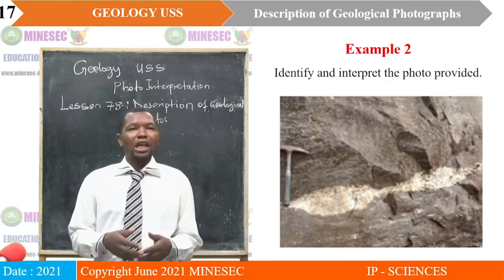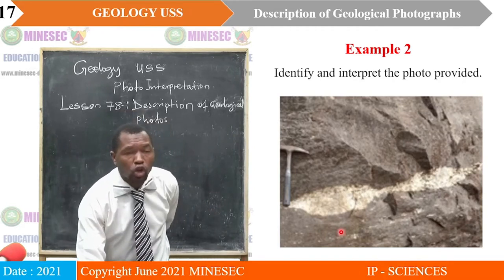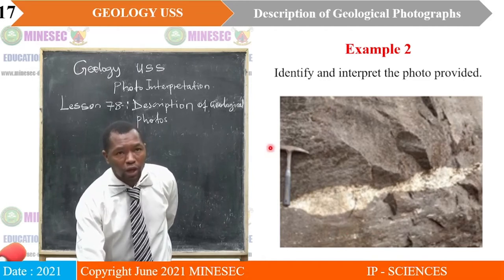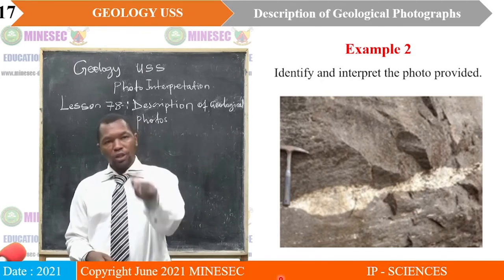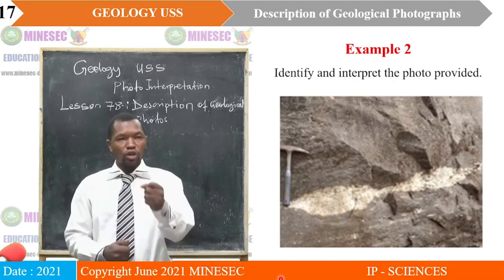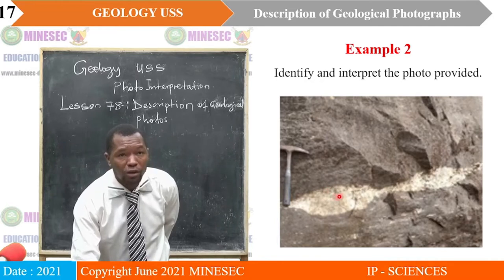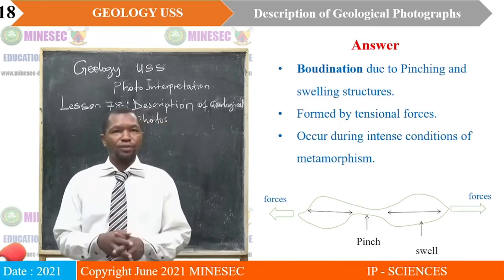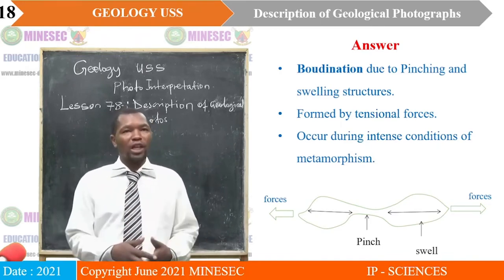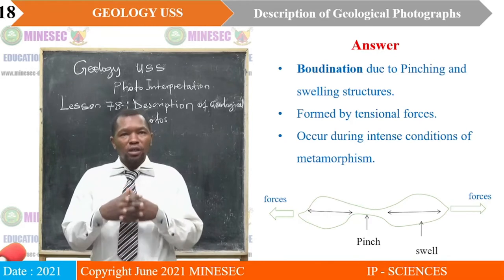Example two: identify and interpret the photograph provided. You should always orient it — study it and orient it in the reading position. If you look at the hammer in the photo, that is the scale. The hammer where you hit is the position of the knot, the part used in hitting. So this is the photo in reading position. You can see swell and pinch, so therefore that photo represents boudinage, due to pinching and swelling structures.